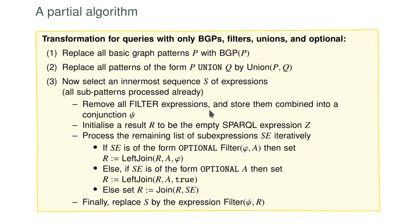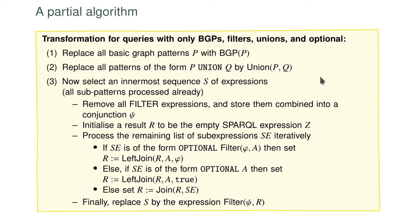We can also give specific algorithms. Here is a transformation algorithm which is a bit more explicit. This algorithm is only for basic graph patterns, filters, unions, and optionals, so it doesn't cover all the features. The first step that always happens is that we put a BGP around all the basic graph patterns. The idea with this algorithm is that we transform the syntactic SPARQL expression into a nested algebra expression by replacing parts of it until everything has been replaced. The first parts we can replace are the basic graph patterns by dropping in the BGP operator around them.